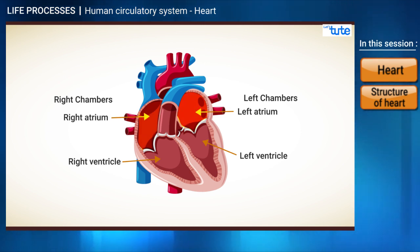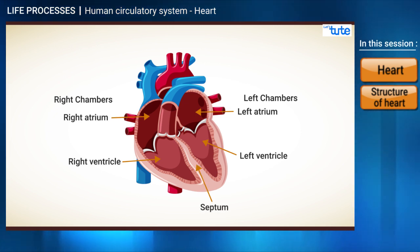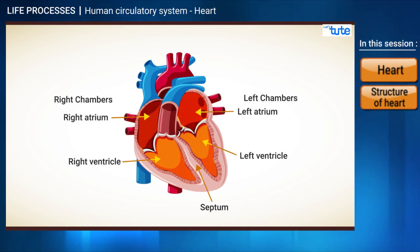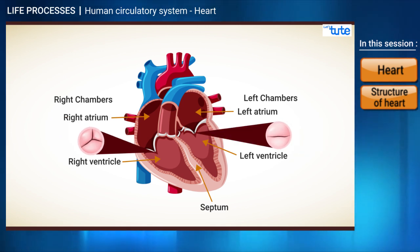These atria and ventricles are separated by a cardiac wall called the septum. The septum prevents the mixing of blood in each chamber. Each of these chambers is guarded by valves — the valves ensure that the blood flows only in one direction.